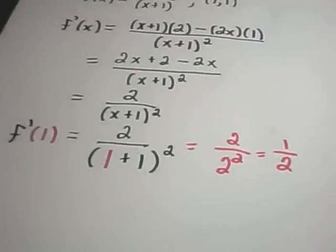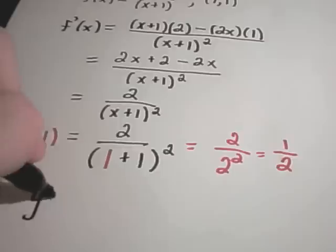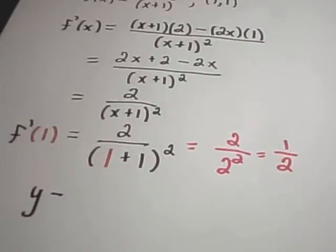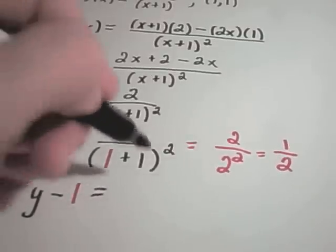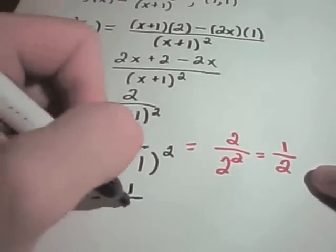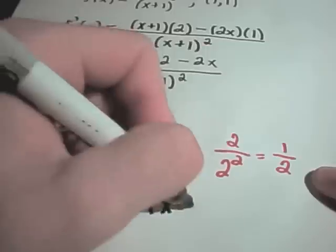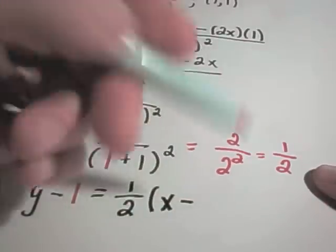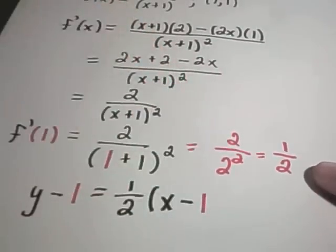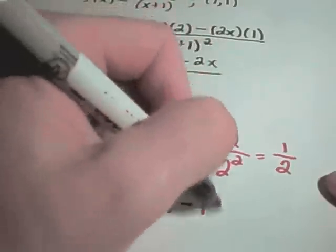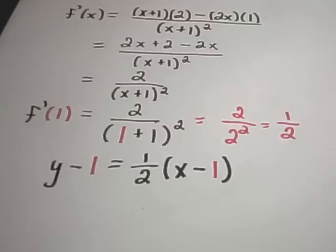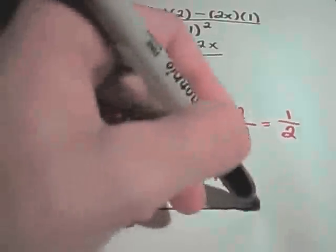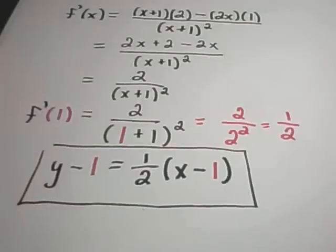So the equation of my tangent line is going to be y minus the y-coordinate, which was 1, equals the slope of the tangent line — which we found from taking the derivative — times x minus the x-coordinate that was given. That is the equation of the tangent line. Unless it specifically says to put it in slope-intercept form, I'll leave it like that.